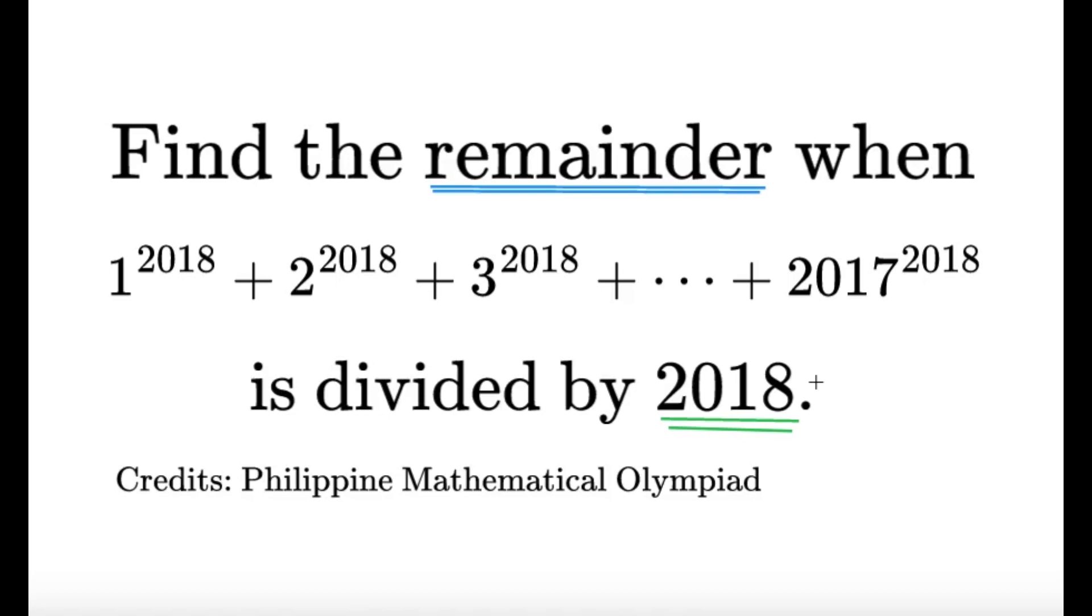To use the Chinese remainder theorem, we must find prime factors of 2018 first. 2018 factors very nicely. It's just 2 times 1009, and these two numbers are indeed prime. So in order to get the remainder via Chinese remainder theorem, we have to take mod 2 or modulo 2 and modulo 1009. Let's try to do that.